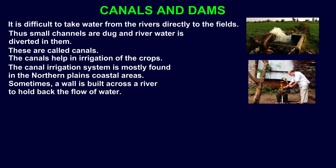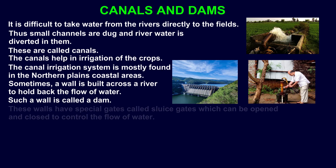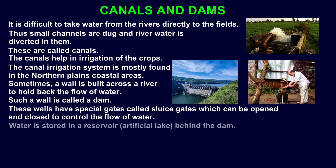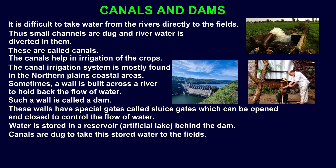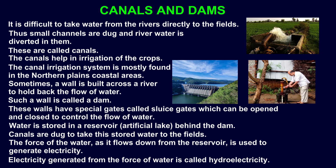Sometimes a wall is built across a river to hold back the flow of water. Such a wall is called a dam. These walls have special gates called sluice gates which can be opened and closed to control the flow of water. Water is stored in a reservoir — an artificial lake — behind the dam. Canals are dug to take this stored water to the fields. The force of water as it flows down from the reservoir is used to generate electricity. Electricity generated from the force of water is called hydroelectricity.